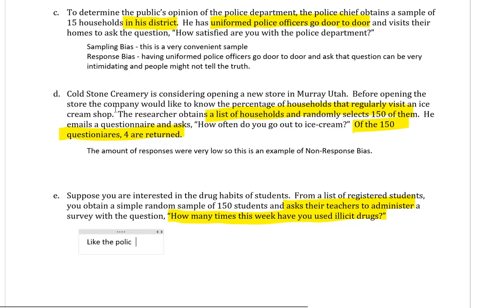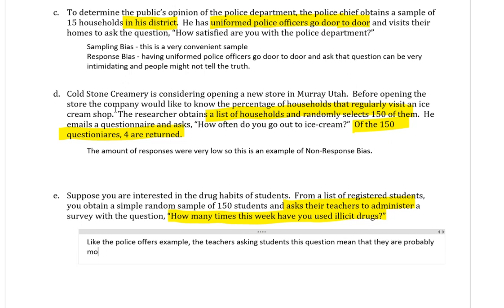This is like the third one with the uniformed police officers. So like the police officers, the teachers asking students this question mean that they are probably more likely to lie about their usage if they use drugs. So this is an example of response bias. So that's definitely an example of that. Otherwise, the sample is gathered decently fine. Simple random sample of 150 students from a list. So everything seems okay there. But having the teachers ask this is very likely to cause bias in the study.